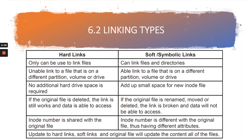Let's look at the comparison between hard link and soft link. For hard link, it can only be used to link files, but for soft link, it can be used to link both files and also directories. In hard link, you are unable to link a file that is on a different partition, volume, or drive — you need to link the file on the same volume or partition — while for soft link, you can link to a file that is on a different partition, volume, or drive. The next comparison is: in hard link, no additional hard drive space is required because all hard link files point to the same inode file. In soft link, it will add a small amount of space because creating a soft link will create a new inode file.